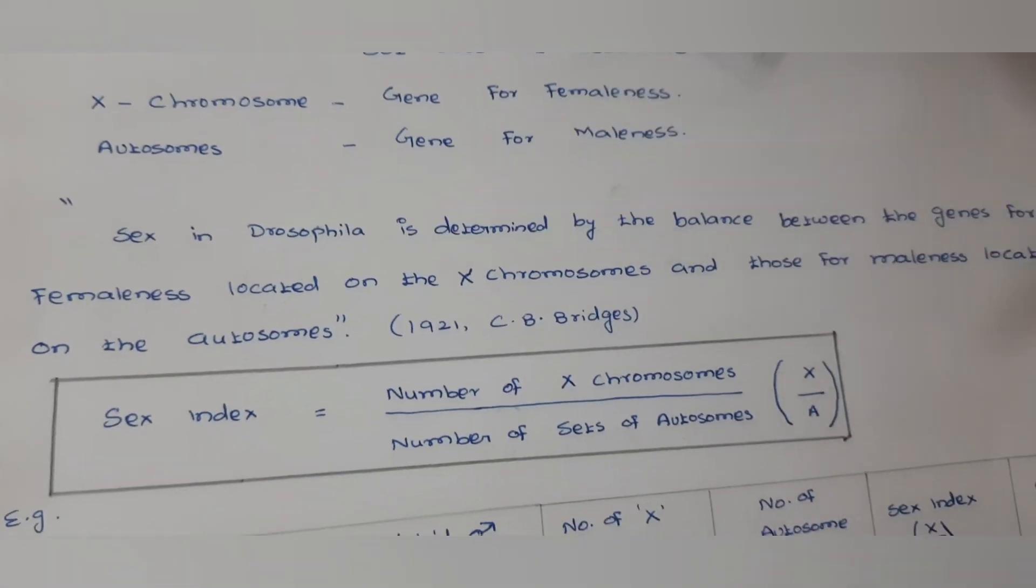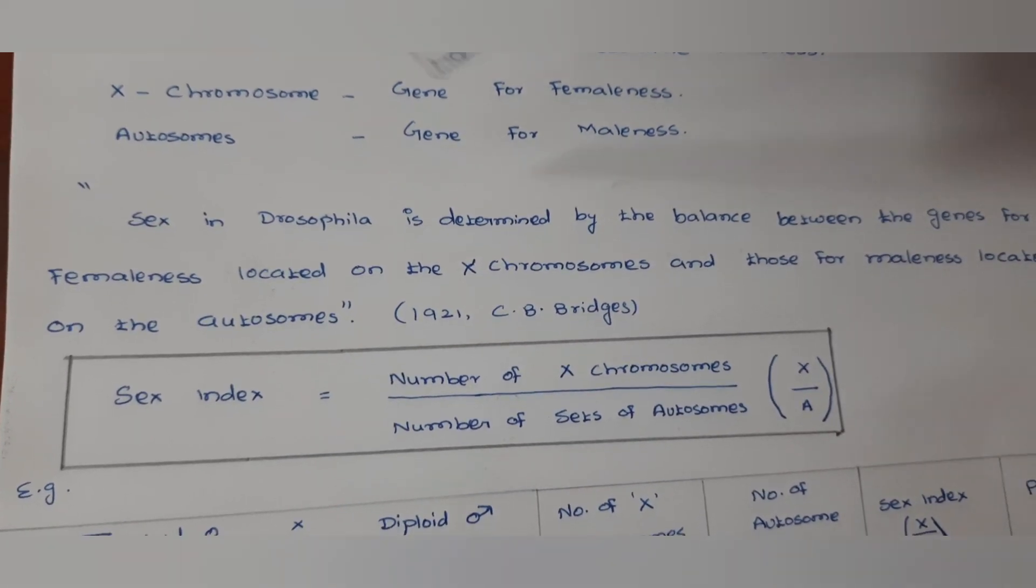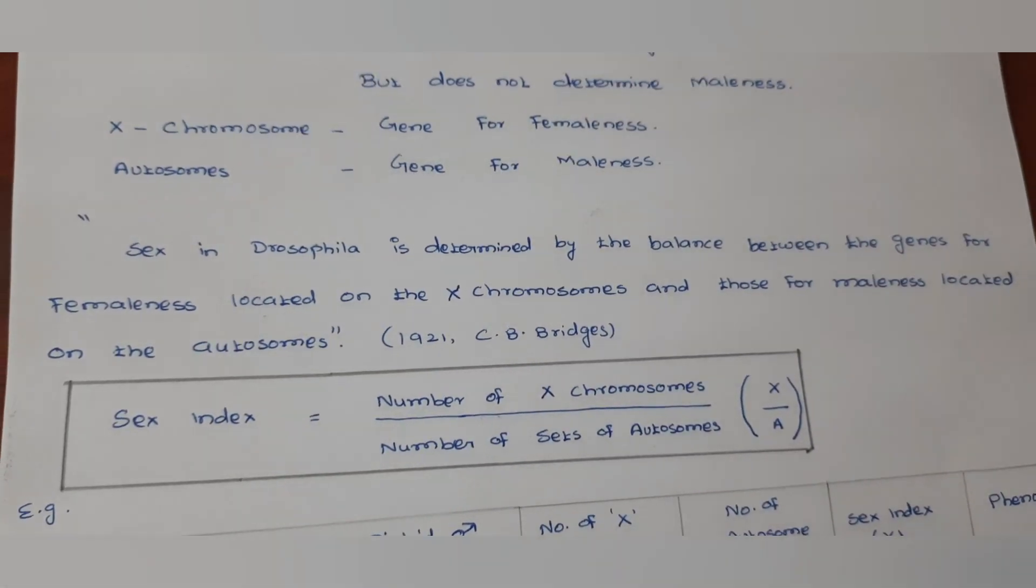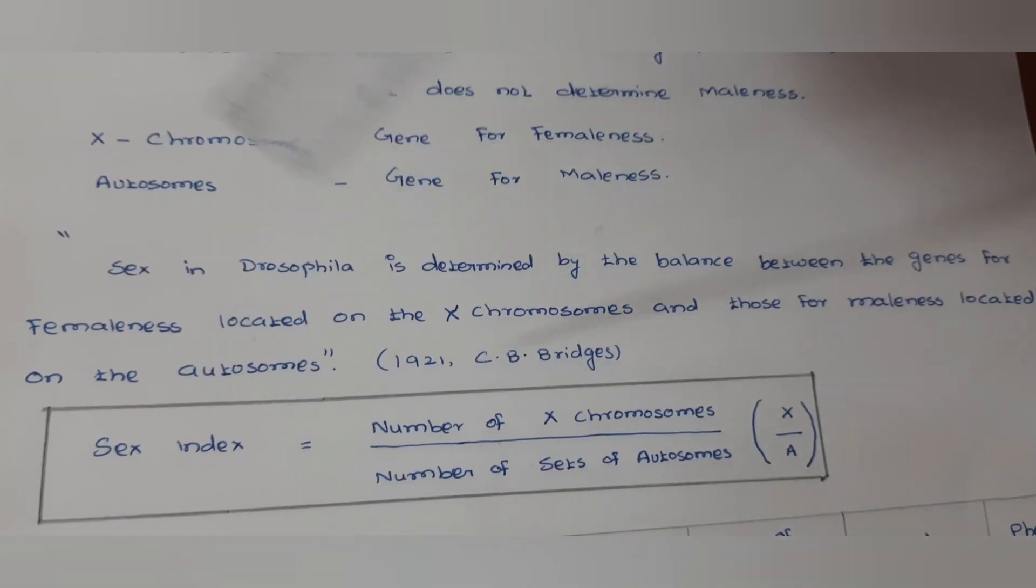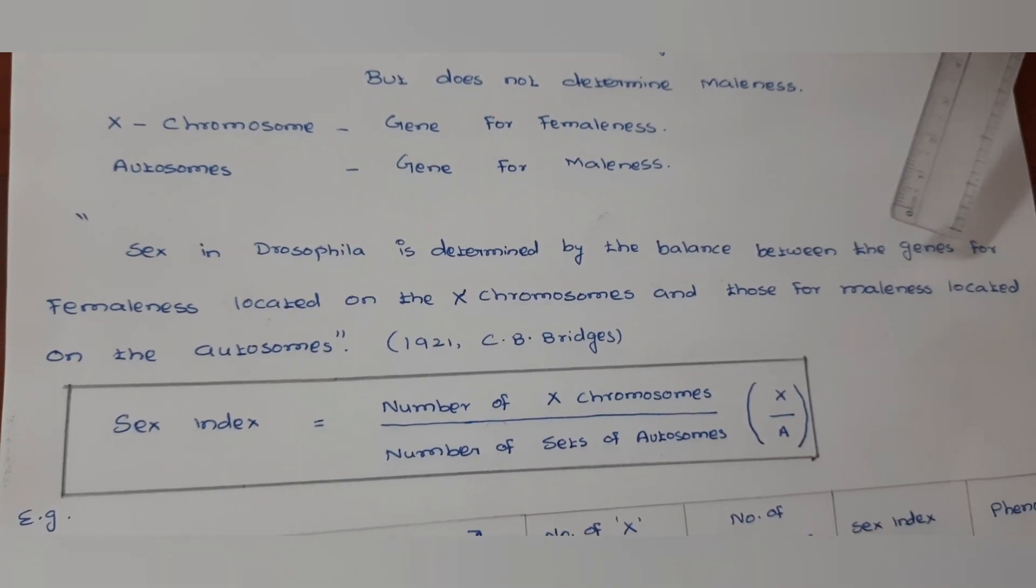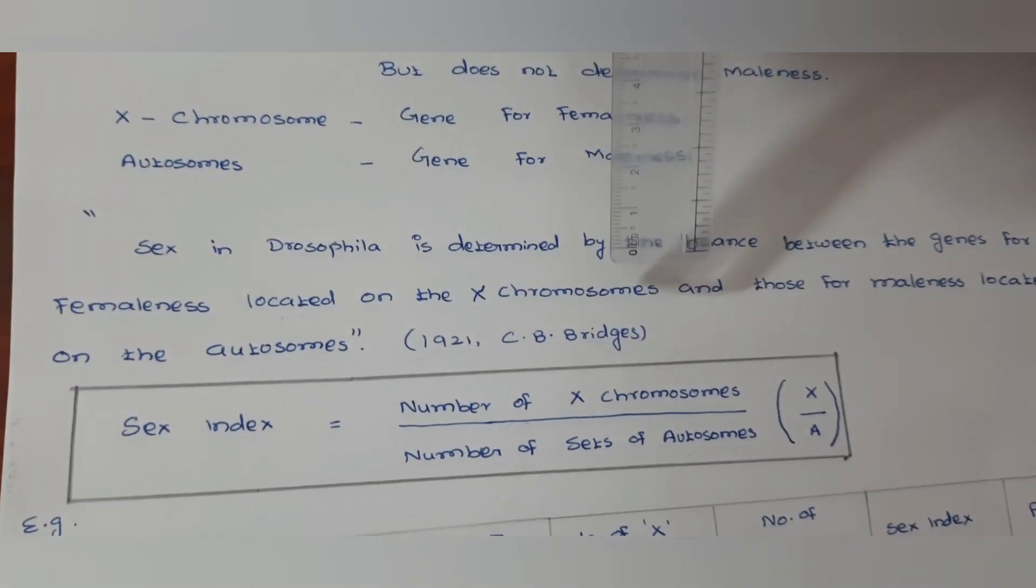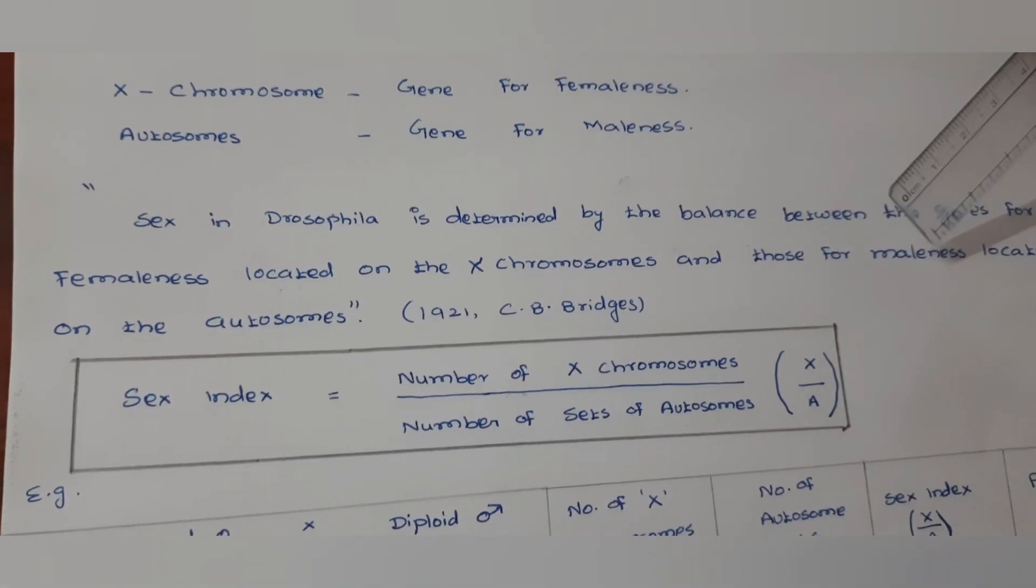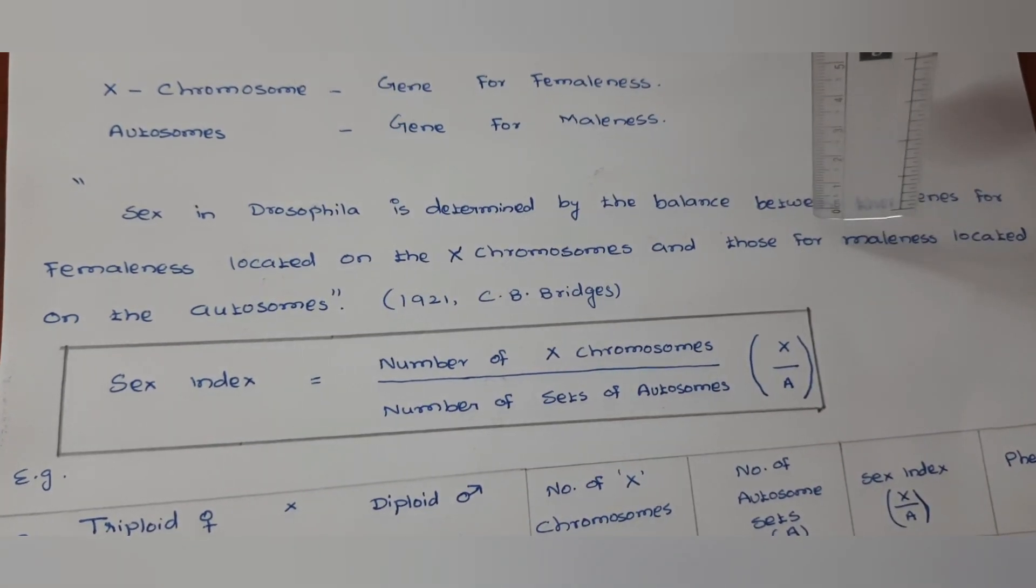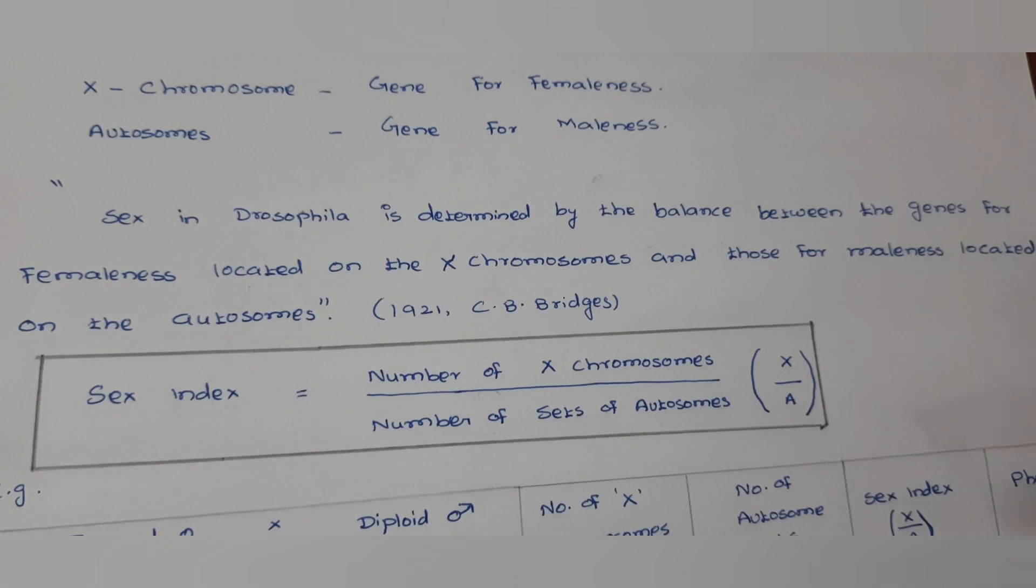Now in 1921, Calvin B. Bridges experimented in Drosophila and provided one new theory. It is called genic balance theory. What does it state? Sex in Drosophila is determined by the balance between the gene for femaleness located on X chromosome and those for maleness located on the autosomes.